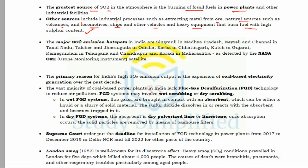The major SO2 emission hot spots in India are Singrauli in MP, Neyveli and Chennai in Tamil Nadu, Talcher and Jharsuguda in Odisha, Korba in Chhattisgarh, Kutch in Gujarat, Ramagundam in Telangana, and Chandrapur and Koradi in Maharashtra. This data is detected by NASA's OMI (Ozone Monitoring Instrument) satellite. The primary reason for India's high SO2 emissions is the expansion of coal-based electricity generation, and the vast majority of coal-based power plants lack FGD (Flue Gas Desulphurization) technology.